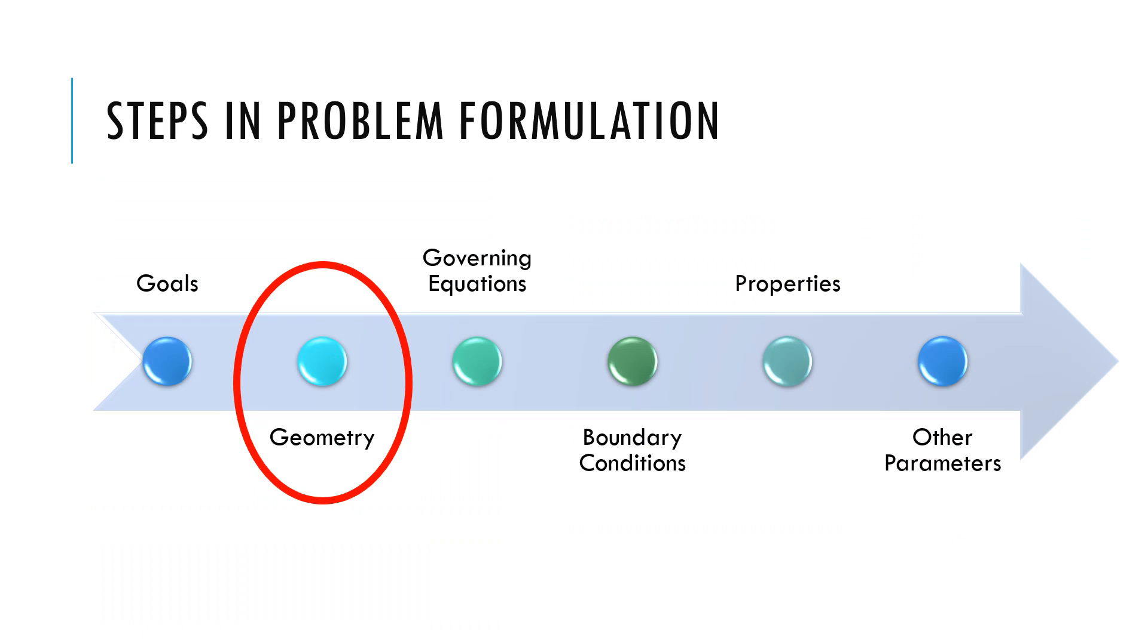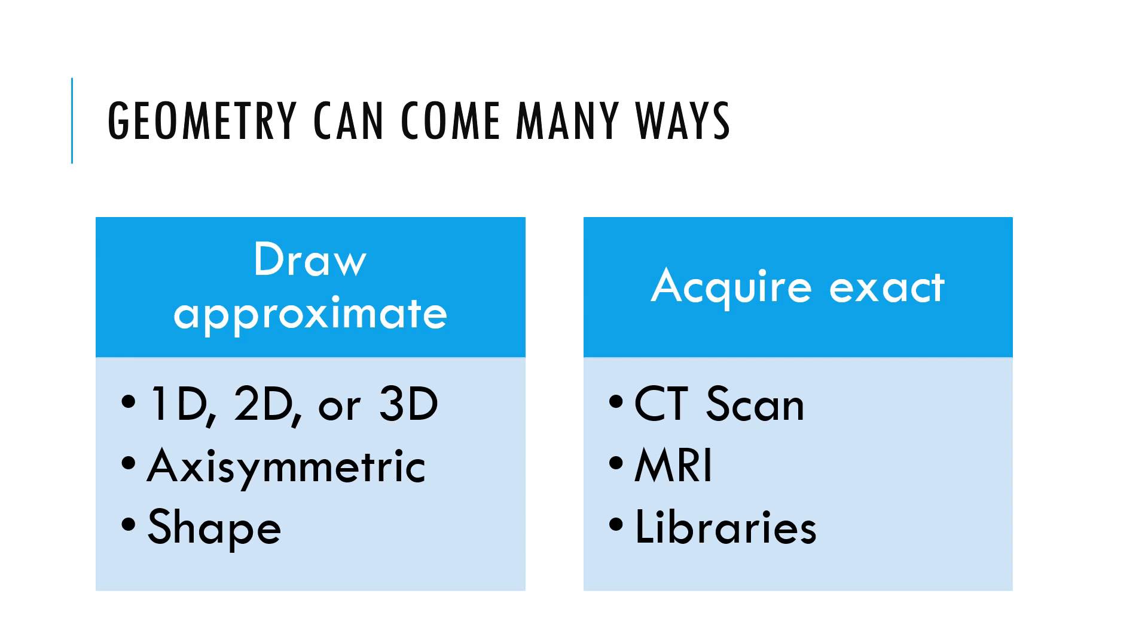Next step in our problem formulation could be the geometry of the product or the process. We can think of geometry being included in two different ways. One is we approximate the geometry like 1D or 2D or axisymmetric. The other group would be acquiring the exact geometry using techniques like downloading from geometry databases.